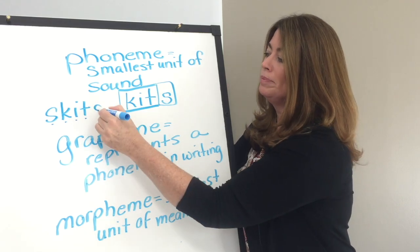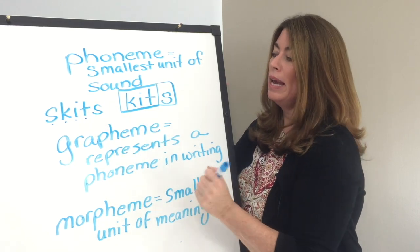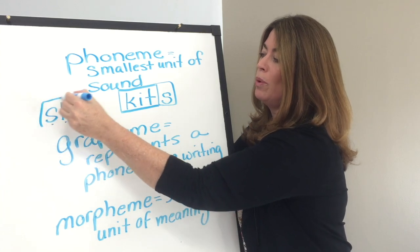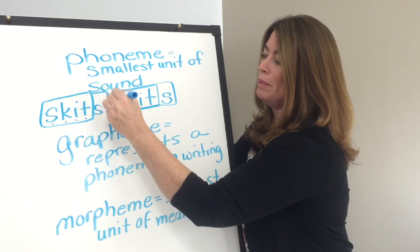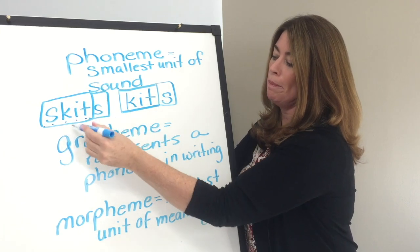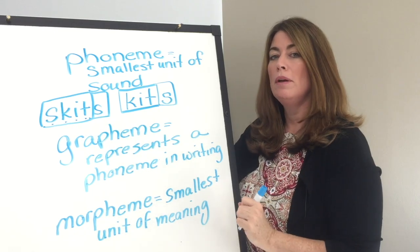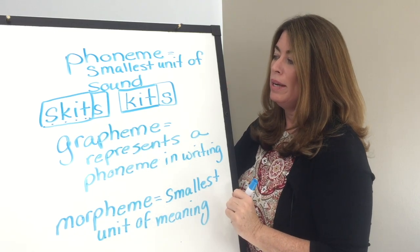Now if I made it plural — 'skits' — I would have two morphemes. I have one more sound and one more grapheme, so one more phoneme and one more grapheme, but another morpheme because that S adds meaning to it.